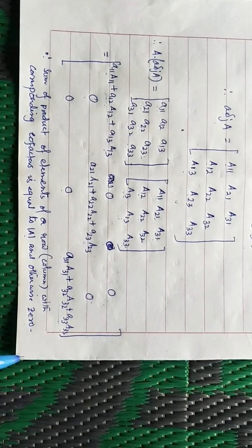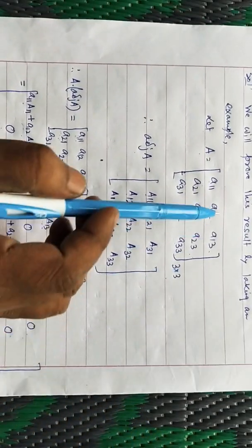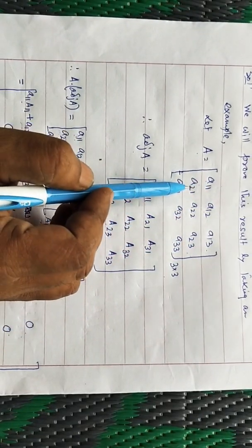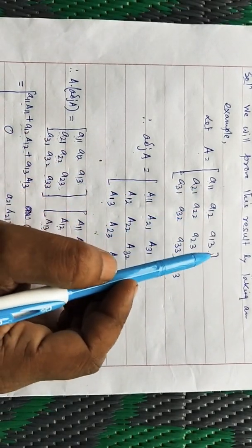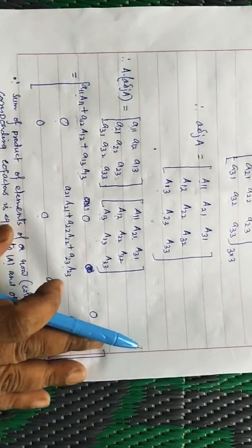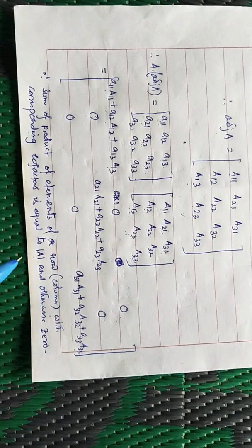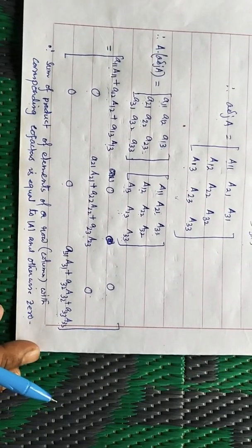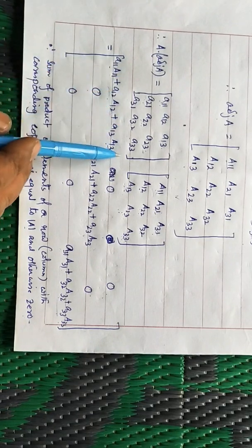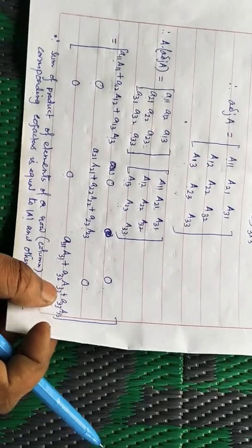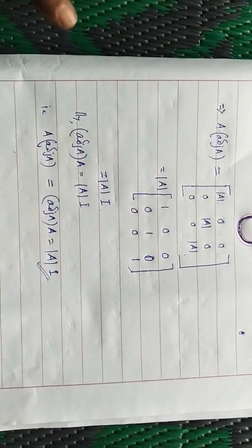When elements of one row are multiplied by the cofactors of a different row, the result is zero. This rule applies to columns as well. Using these properties, the diagonal entries of A × adjoint(A) are each equal to det(A), and all off-diagonal entries are zero. So A × adjoint(A) equals the matrix with det(A) on the diagonal and zeros elsewhere.